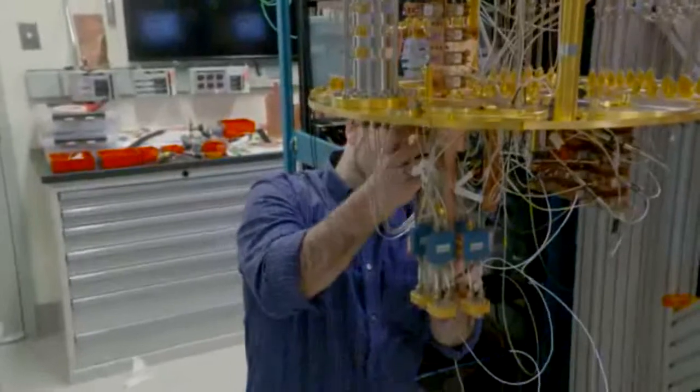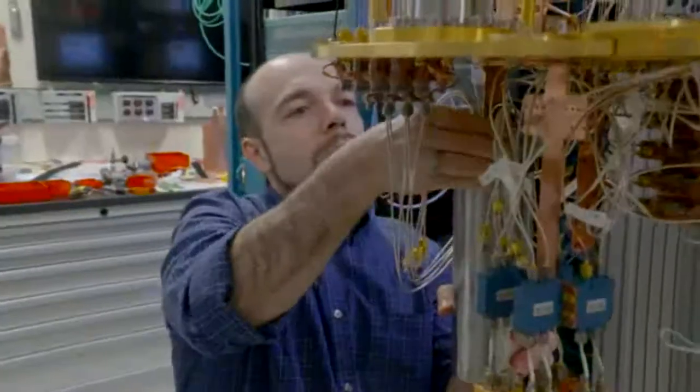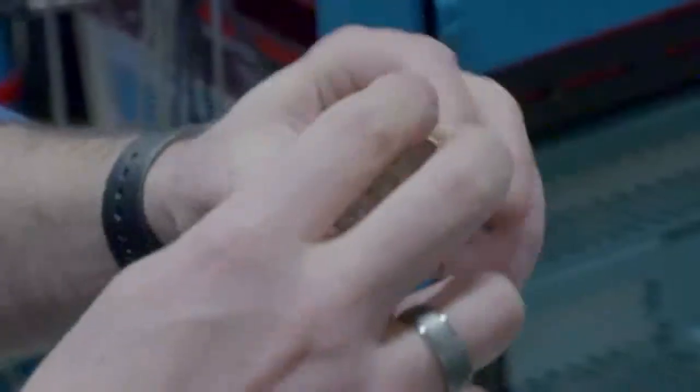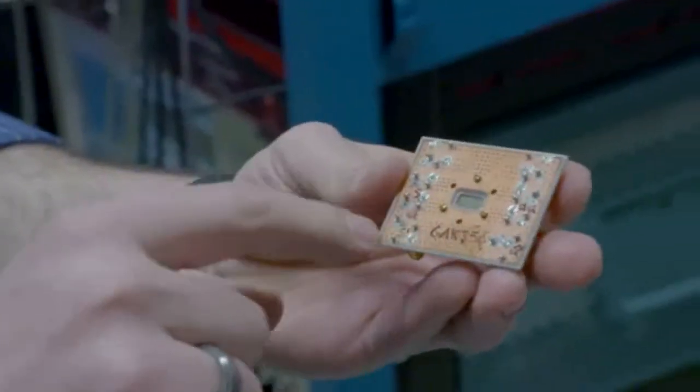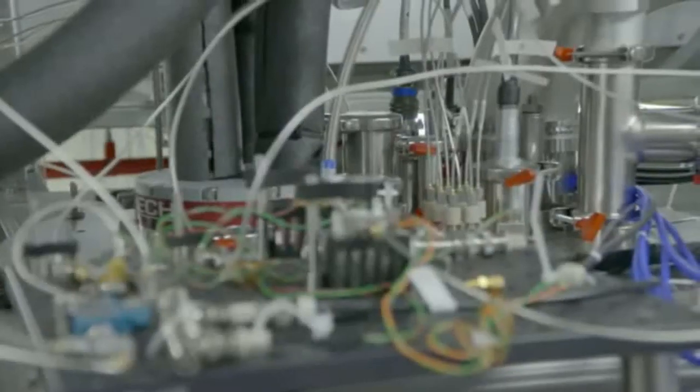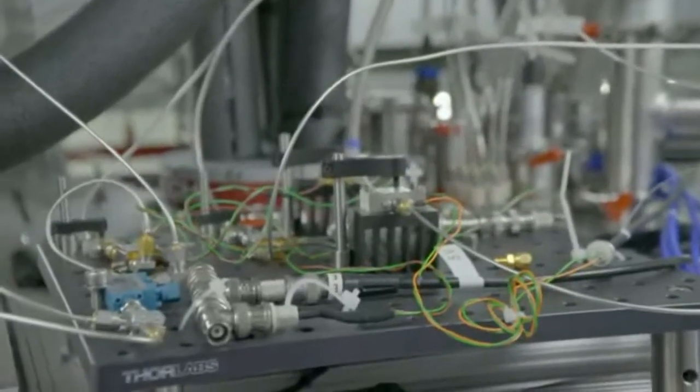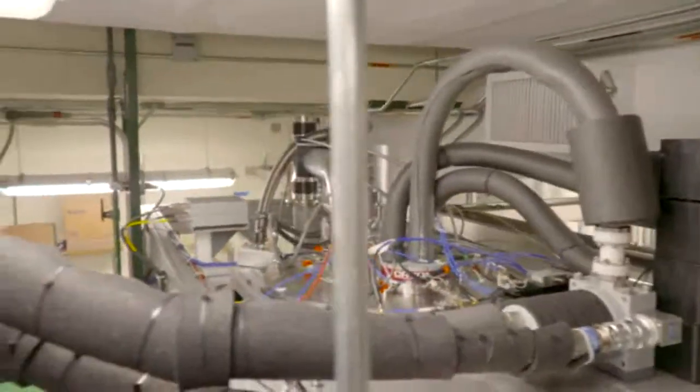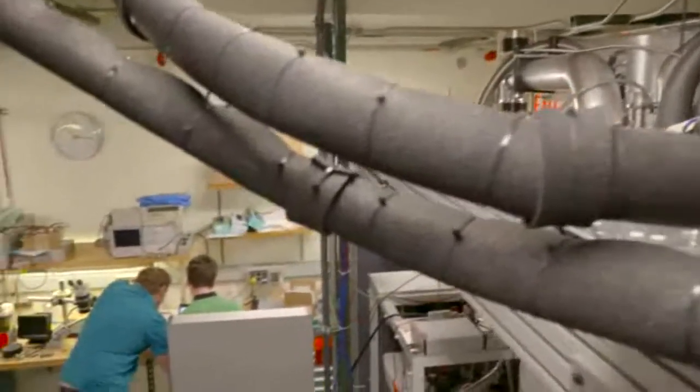Quantum computing works fundamentally differently from today's computers. A classical computer makes use of bits to process information, where each bit represents either a 1 or a 0. In contrast, a qubit can represent a 1, a 0, or both at once, which is known as superposition.